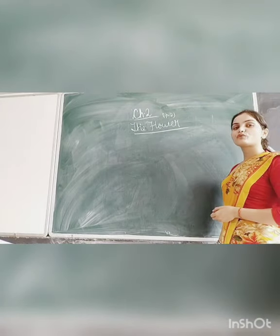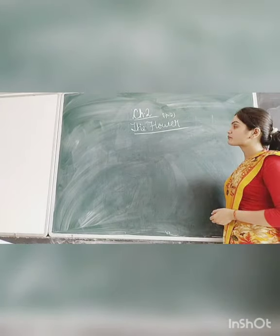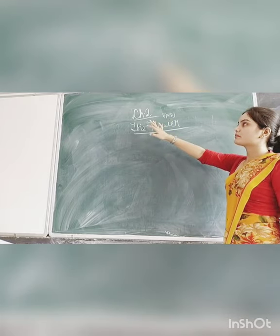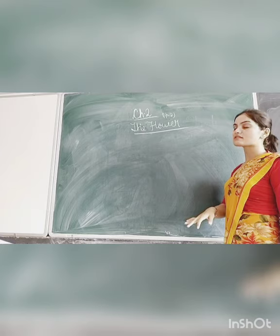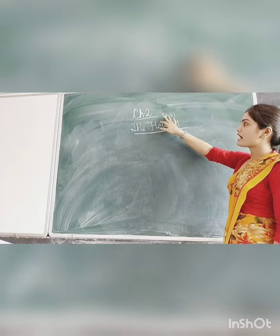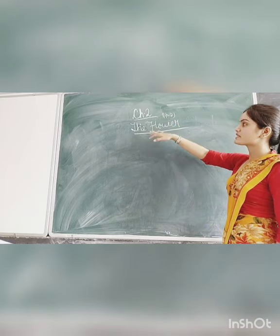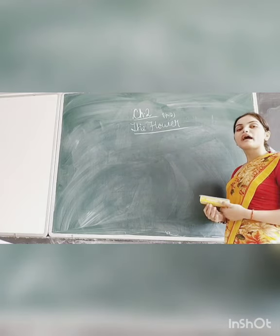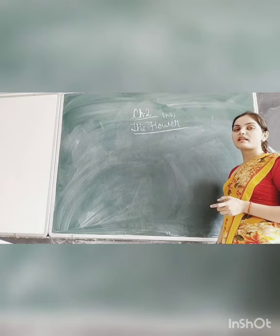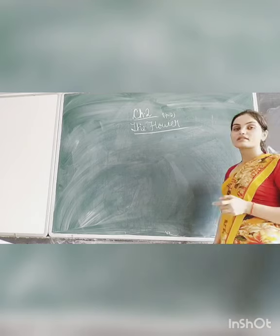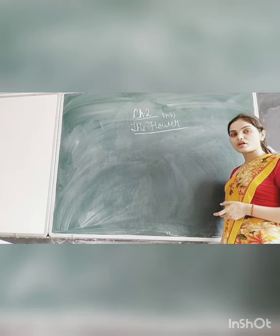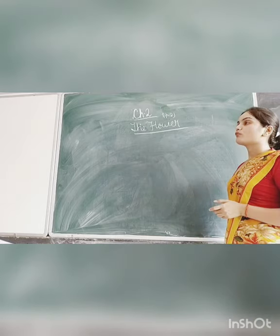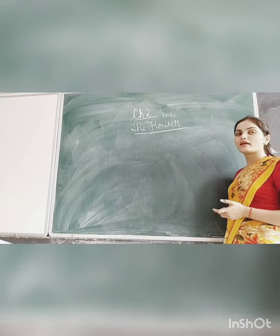A very good morning to all of you students. We had already studied part one of chapter number 2. Today we are going to start part 2 of chapter number 7, that is the flower — its structure and types. So we will do a quick revision here.